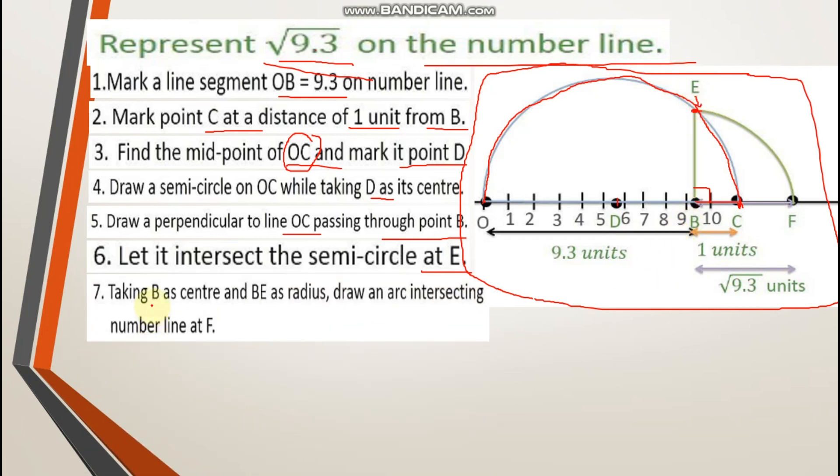Now taking B as a center, BE as a radius, draw an arc intersecting number line at F. Again you need to put your compass at point B and open your compass till E. Open your compass till E, and with the pencil here, your compass will remain at B.